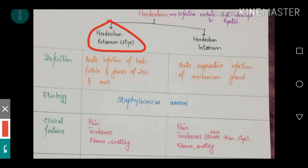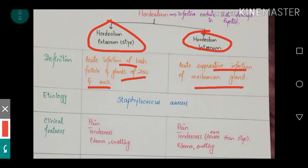Hordeolum externum is defined as an acute infection of the lash follicle and the glands of Zeis and Moll. These two glands are the anatomical part of the eyelid. Hordeolum internum is the acute suppurative infection of the meibomian glands. So if the infection occurs in the glands of Zeis and Moll it will be hordeolum externum, and if that infection occurs in the meibomian gland that will be hordeolum internum.